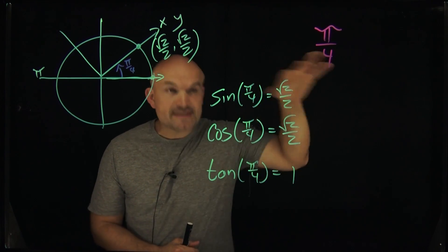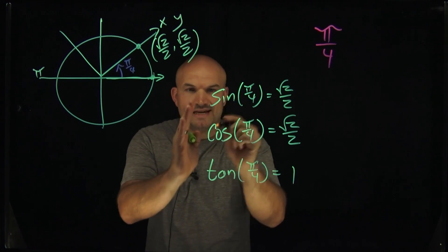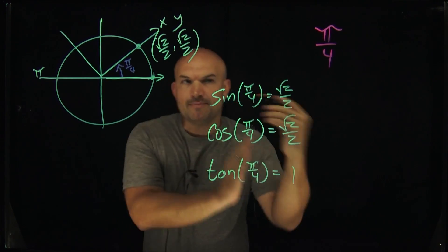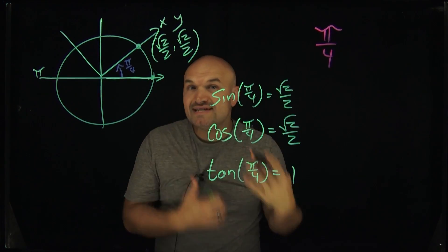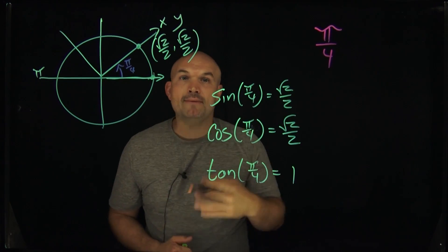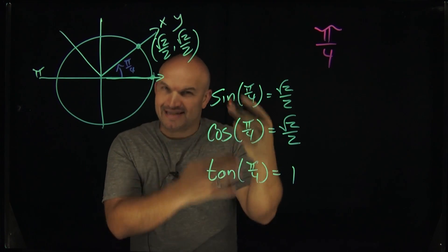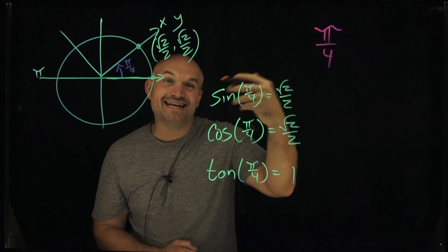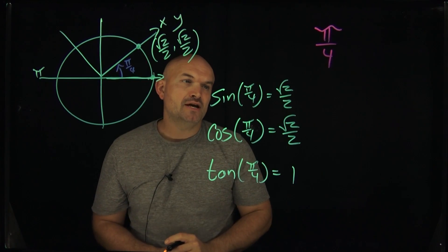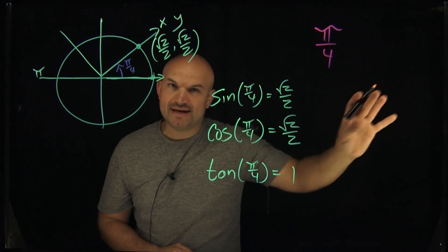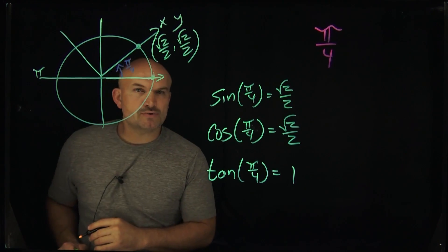Now let's get into our reciprocal identities. The important thing is they're very much related to sine, cosine, and tangent — they're just the reciprocal of those. So if sine of an angle represents the y coordinate, cosecant of that angle represents 1 over y. And since sine and cosine are the same here, cosecant and secant — which is the reciprocal of cosine — are also going to be the same. So rather than going through the math twice, I'll do it once: how do we simplify 1 over square root of 2 over 2?